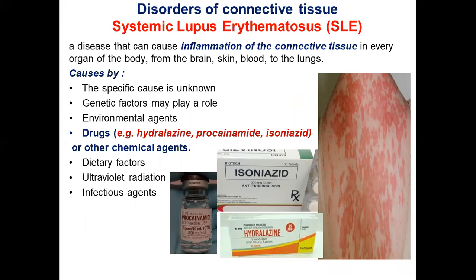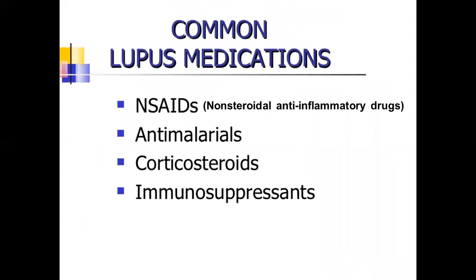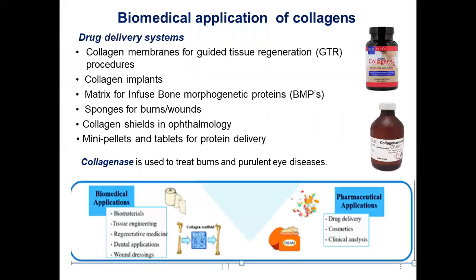Systemic lupus erythematosus is a disease that can cause inflammation of connective tissue in every organ of the body, from the brain, skin, and blood to the lungs, and it may be caused by drugs and other chemical agents. Common lupus medications include non-steroidal anti-inflammatory drugs, anti-malarials, immunosuppressants, and corticosteroids.